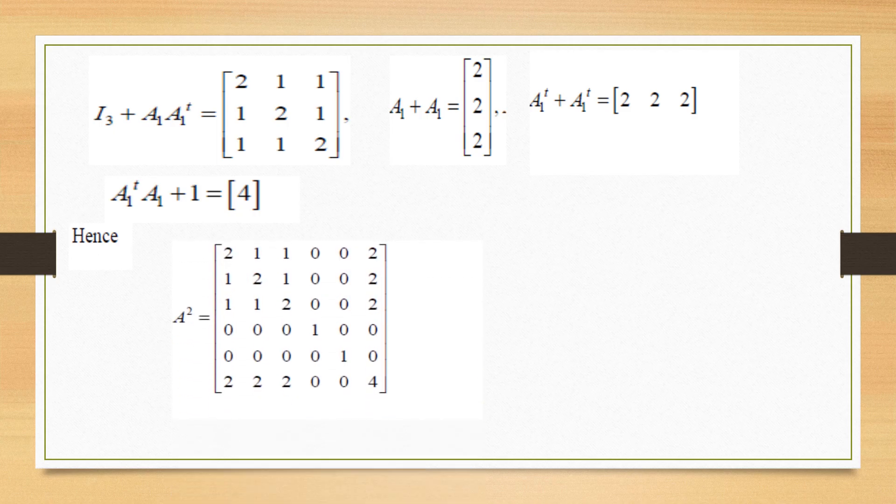Hence, A square is this. We replace here all the entries of the computed sub-matrices and obtain A square.